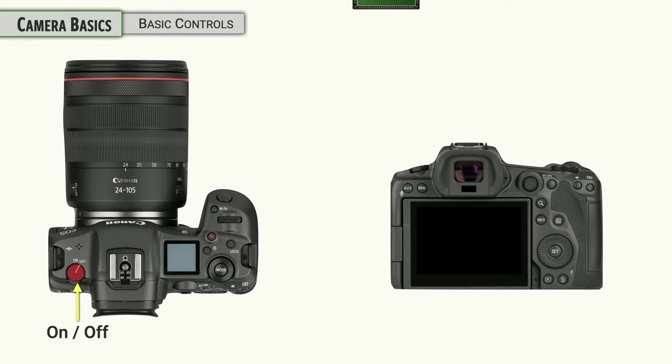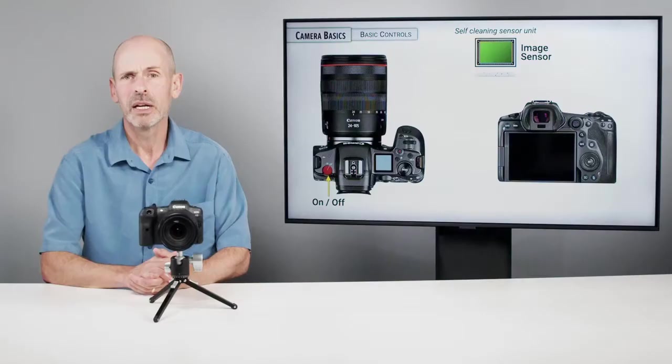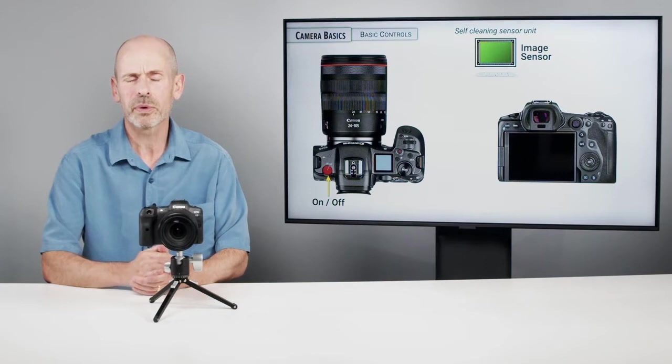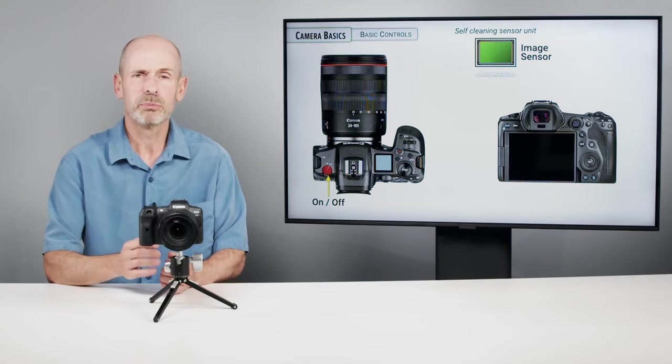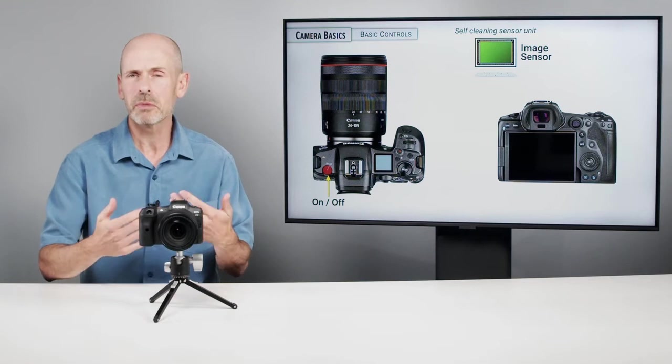All right, let's talk about our basic controls on the camera. When you flip the camera on, the camera goes through an automatic sensor cleaning, tries to shake off any dust that might be on the sensor. This would come forth in any photographs of light areas of sky, white walls, for instance. You would see black specks where you might have a dust speck on the sensor. Now, generally speaking, these self-cleaning sensor units do a pretty good job, and they're going to keep your camera free most of the time of most of the problems.